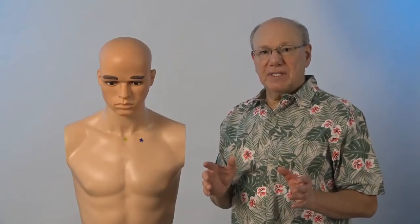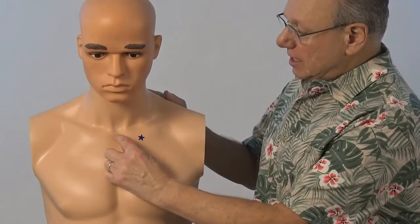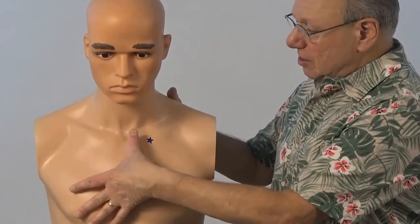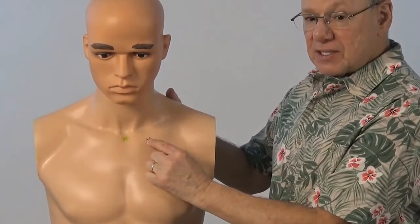To locate Kidney 27, find the notch at the top of your sternum, right about here. Then move to the left the width of your thumb twice, just like this.